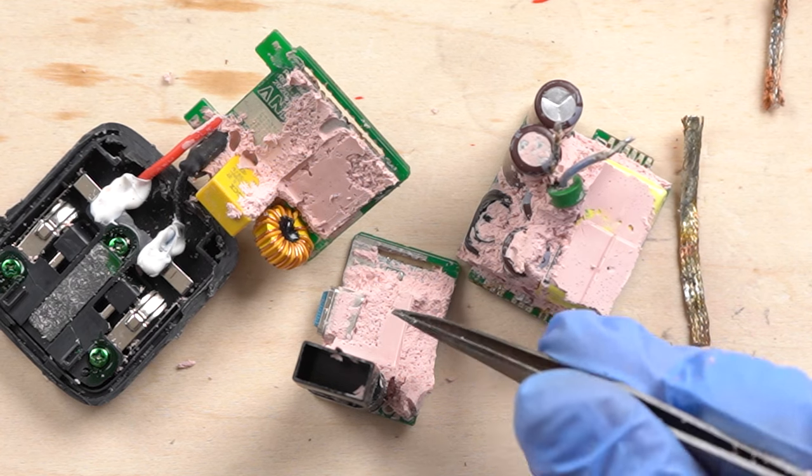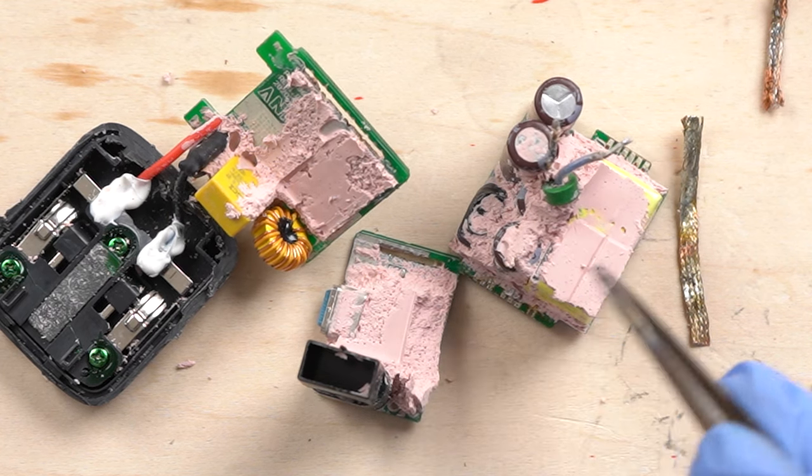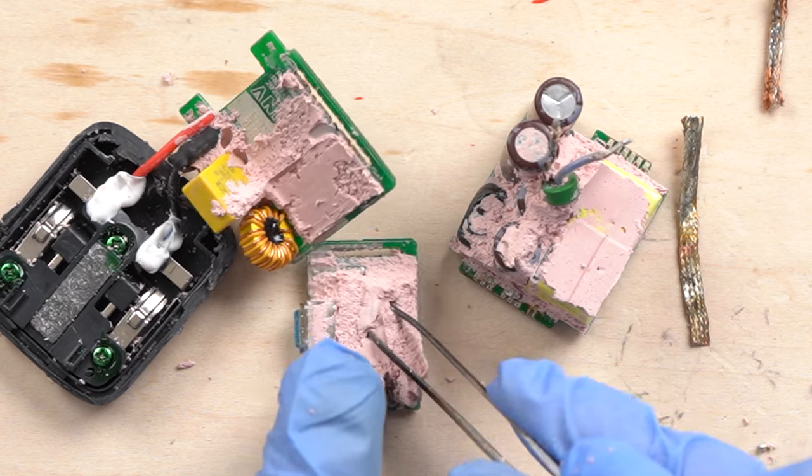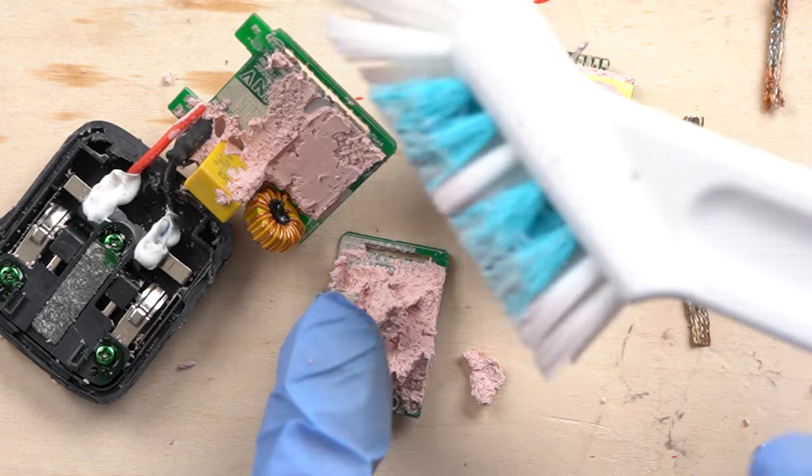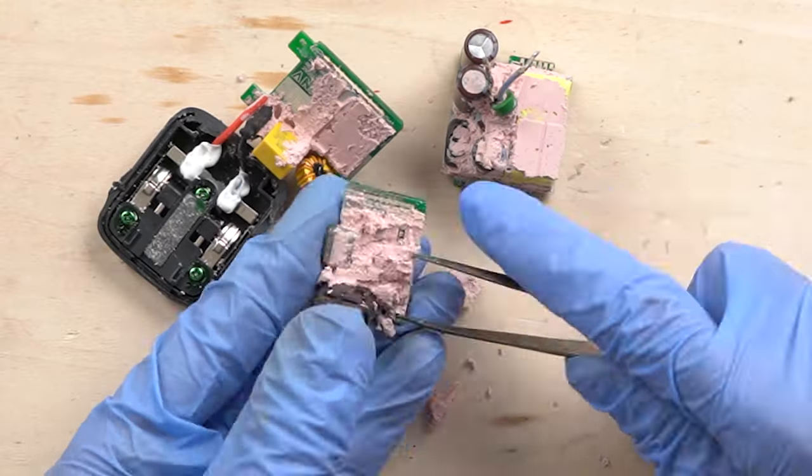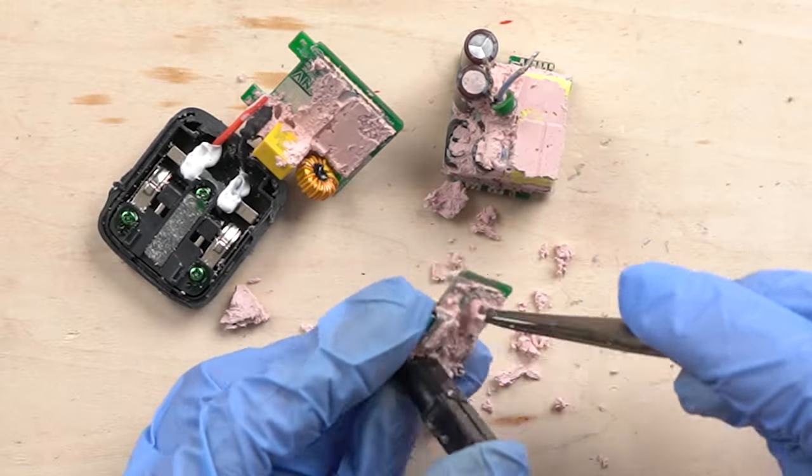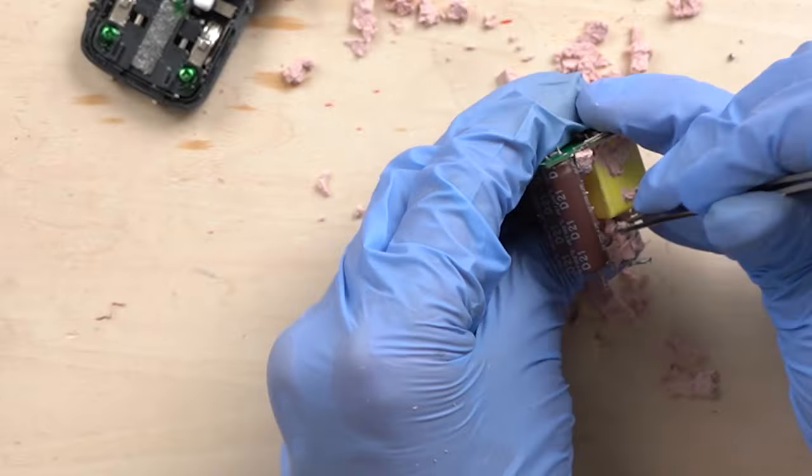Look, as expected, silicone is stuffed in every corner. Pink silicone. It's hard to inspect the board so I'll remove the silicone. I used the brush and scrubbed the silicone off. It must be pretty difficult to fill in the silicone leaving no space. I wonder how they do it.